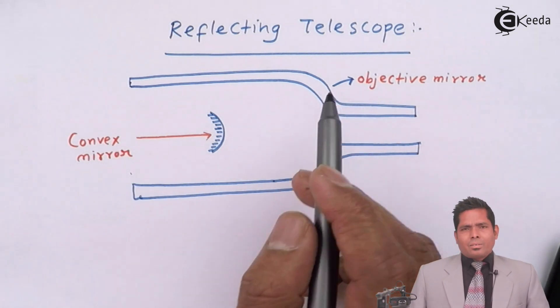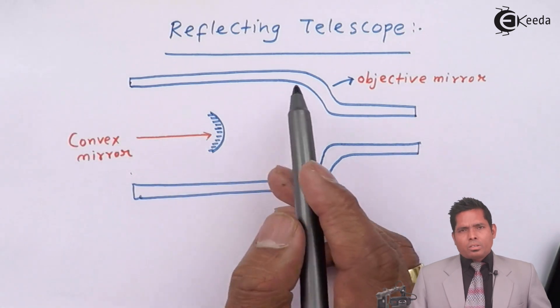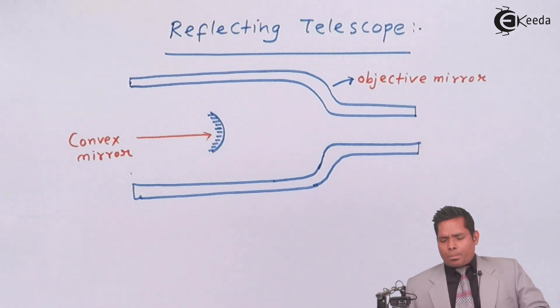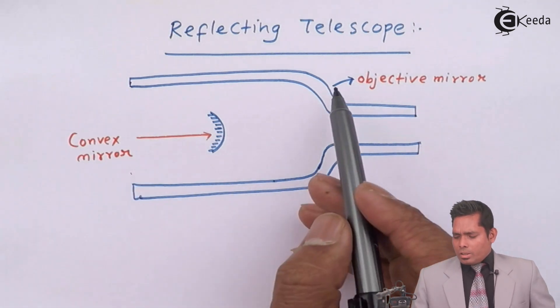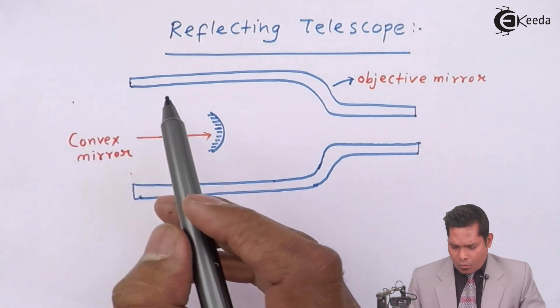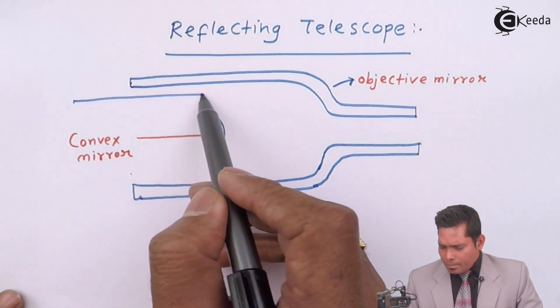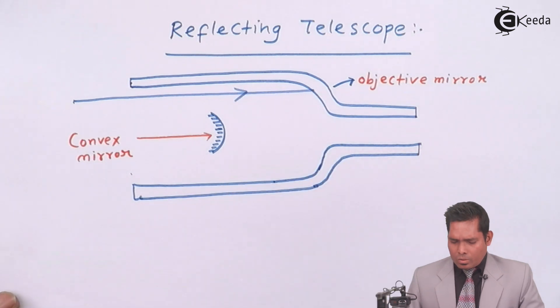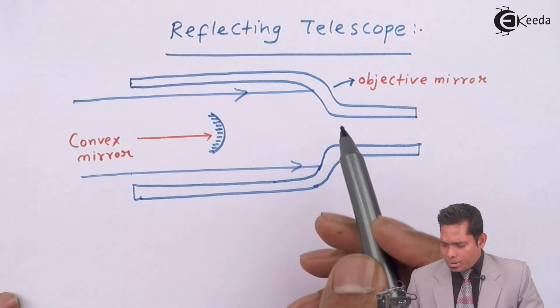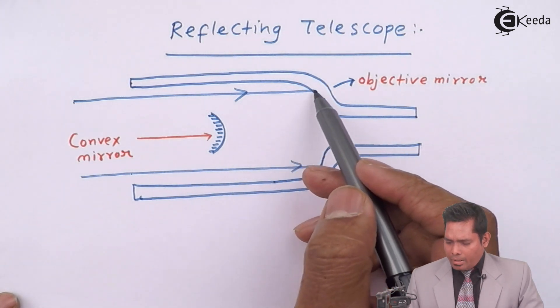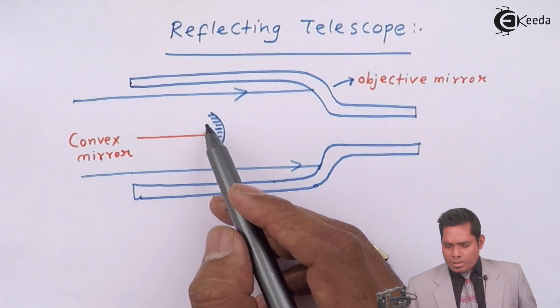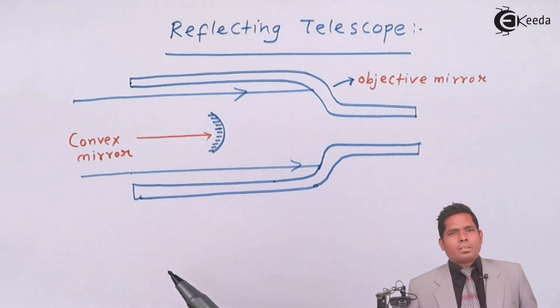Both are the mirrors used. The rays are coming parallel because the object is at a very distant place, at infinity. So the rays are supposed to become parallel and fall on this objective mirror. The rays coming parallel fall on this objective mirror. This is how the ray moves and falls on this objective mirror, and it is reflected and falls on the secondary mirror, that is the convex mirror.